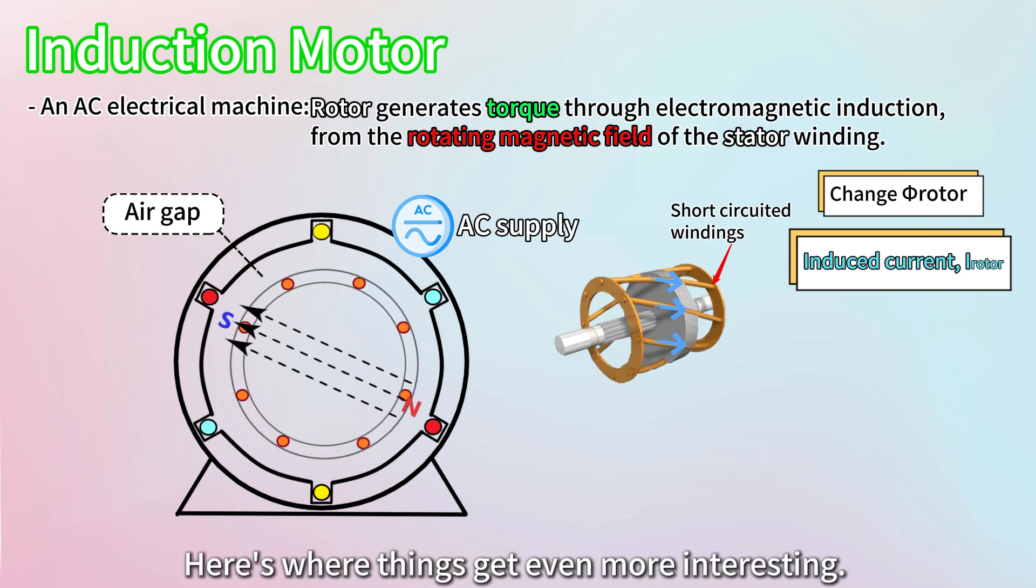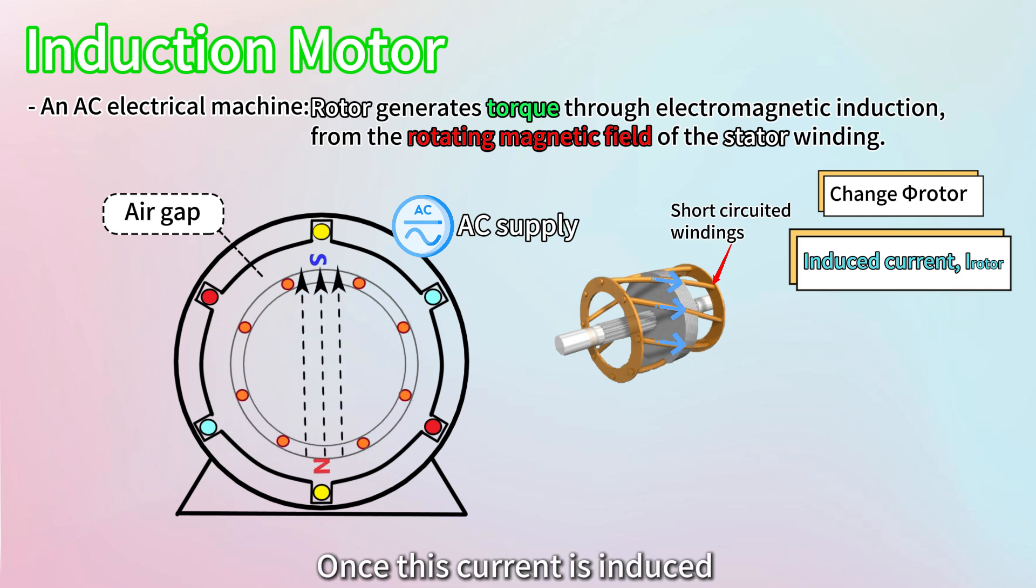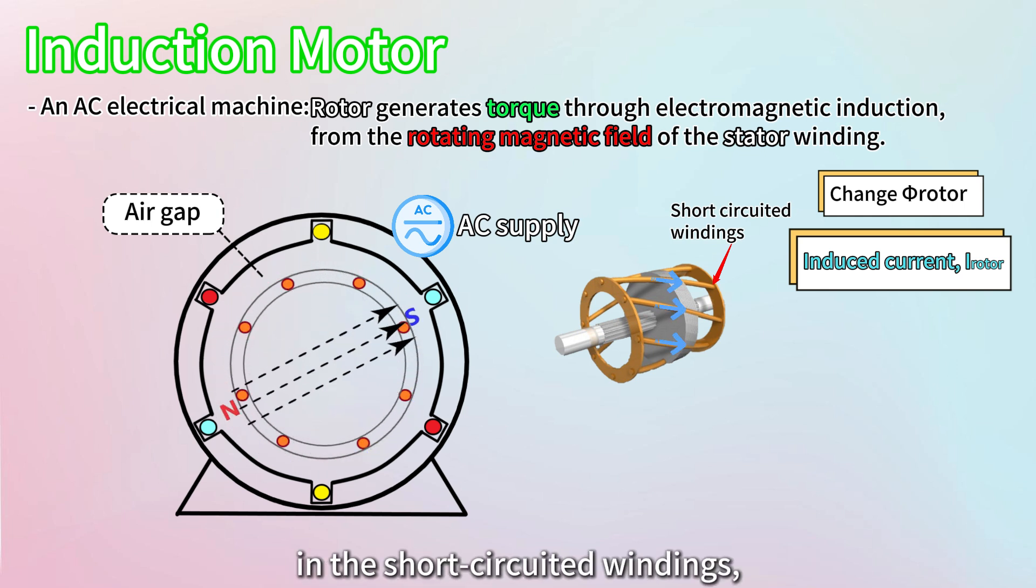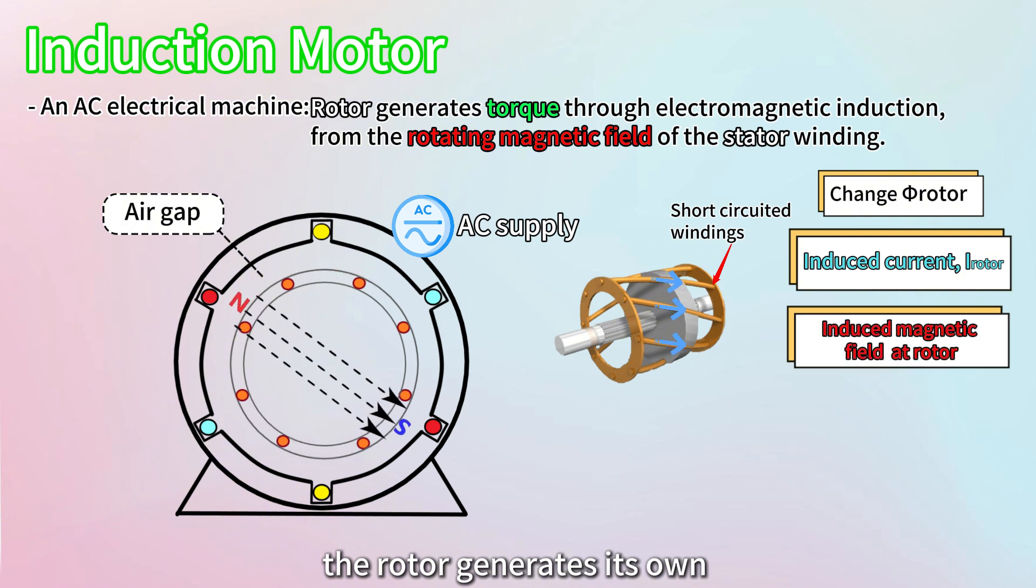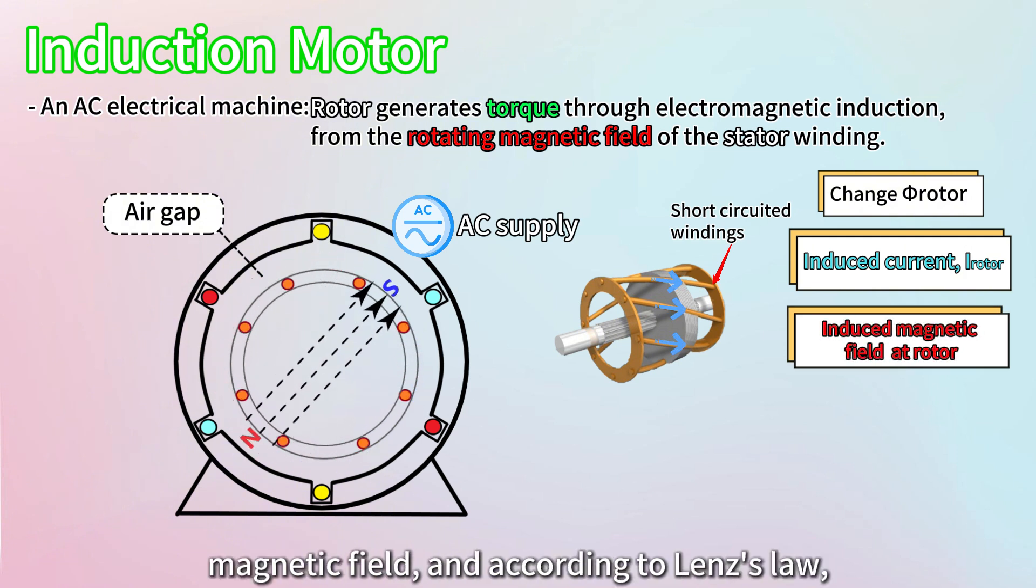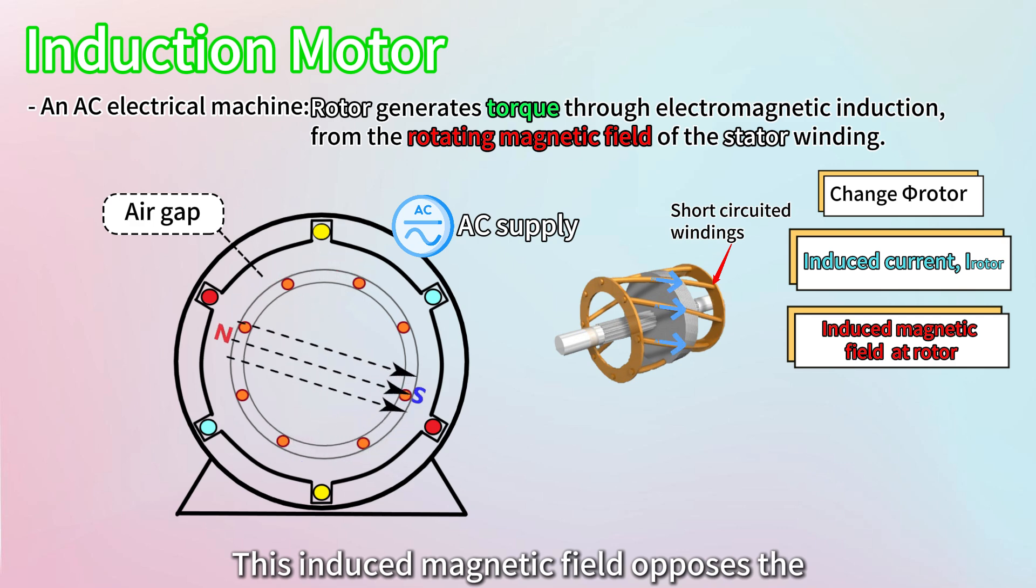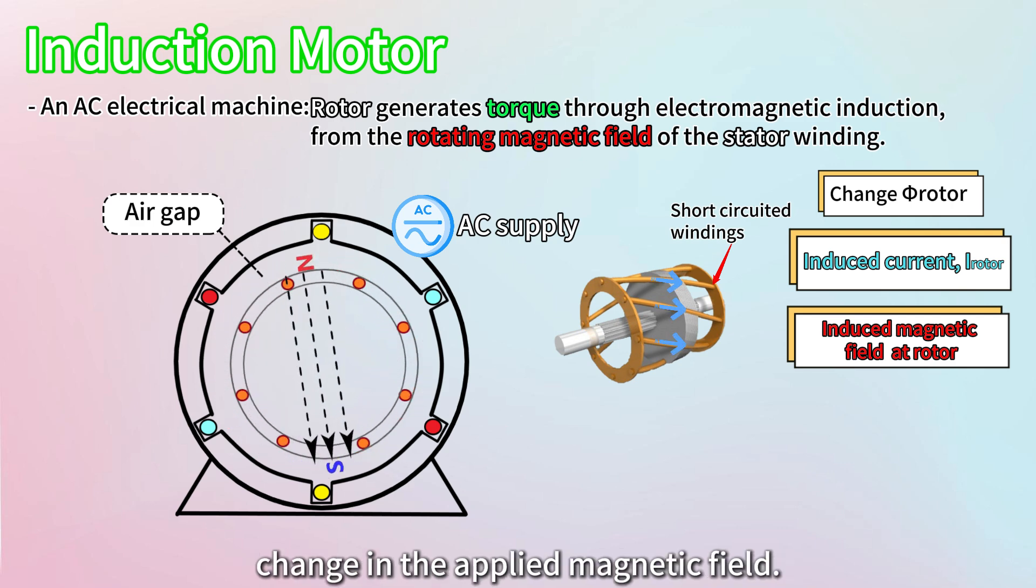Here's where things get even more interesting. Once this current is induced in the short-circuited windings, the rotor generates its own magnetic field. And according to Lenz's law, this induced magnetic field opposes the change in the applied magnetic field.